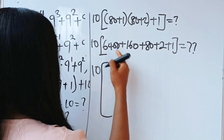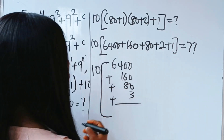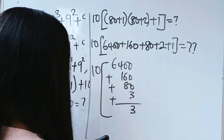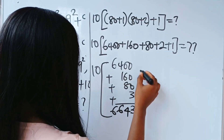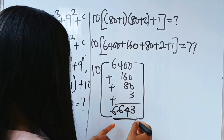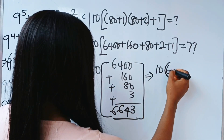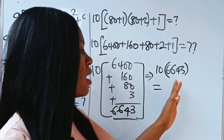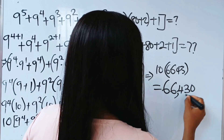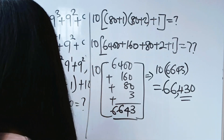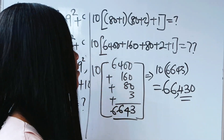So we have 10 brackets: 6400 plus 160 plus 80 — adding those together: bring down 0, then 6 plus 8 gives 14, write 4 and carry 1, add it to 6 to get 6643, plus 1 gives 6643. So this equals 10 multiplied by 6643. When multiplying any number by 10, just add a zero — so we get 66430. You can use your calculator to verify — this is exactly what you will get. Thank you so much for watching, and have a lovely day!